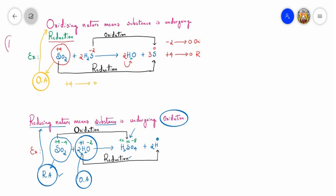Now let us understand both oxidizing nature and reducing nature. In reaction one, sulfur dioxide acts as an oxidizing agent and undergoes reduction, while sulfur in H2S acts as a reducing agent. In reaction two, sulfur in sulfur dioxide shows reducing nature. So sulfur dioxide can show both oxidizing nature and reducing nature — the concept is clear.